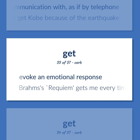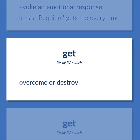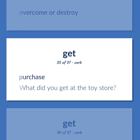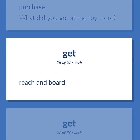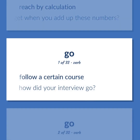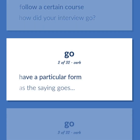Evoke an emotional response. Brahms's Requiem gets me every time. Overcome or destroy. Purchase. What did you get at the toy store? Reach and board. Reach by calculation. What do you get when you add up these numbers? Follow a certain course. How did your interview go? Have a particular form. As the saying goes.